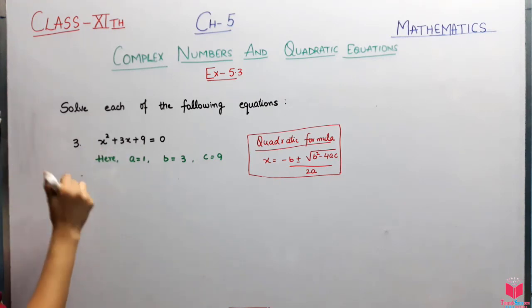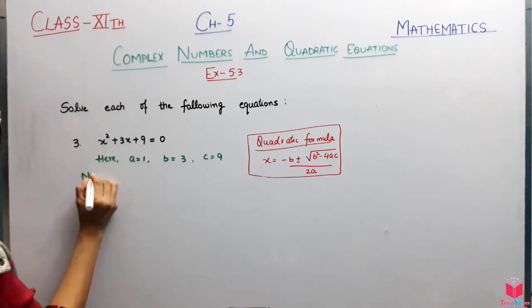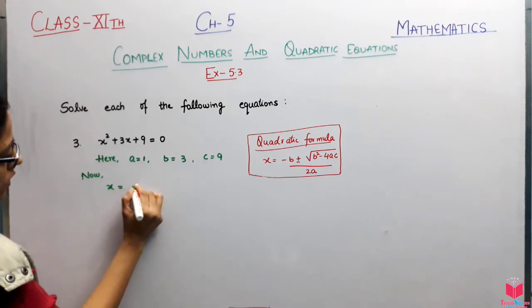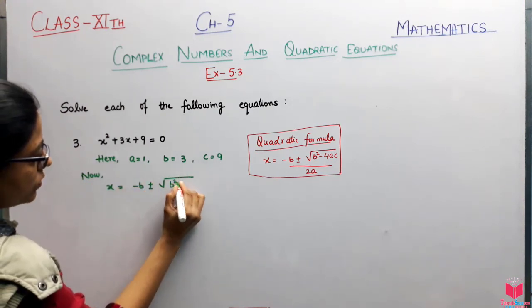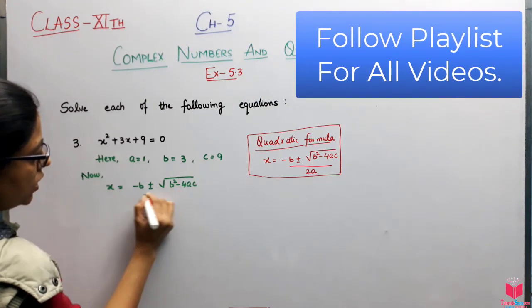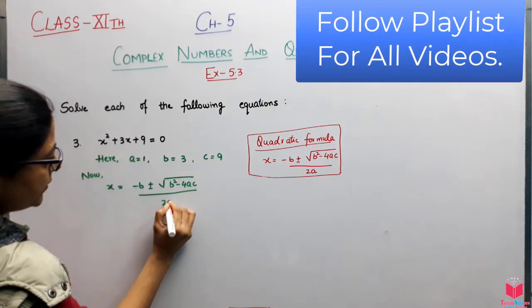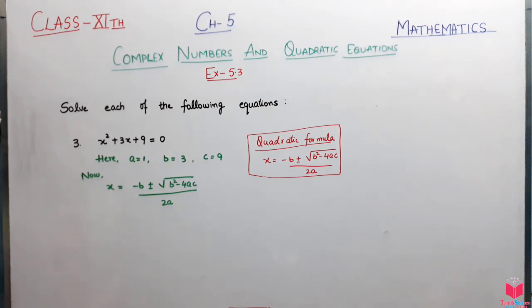Now we will apply the quadratic formula. x is equal to minus b plus minus under root of b square minus 4ac whole upon 2a. Now replace the values here.